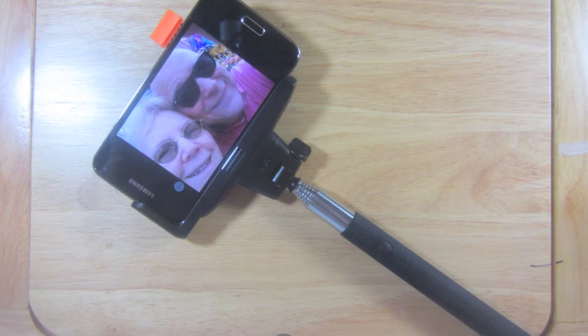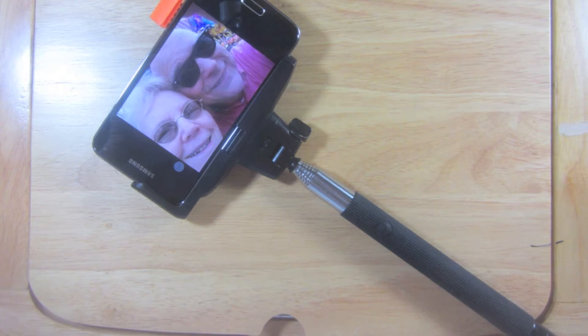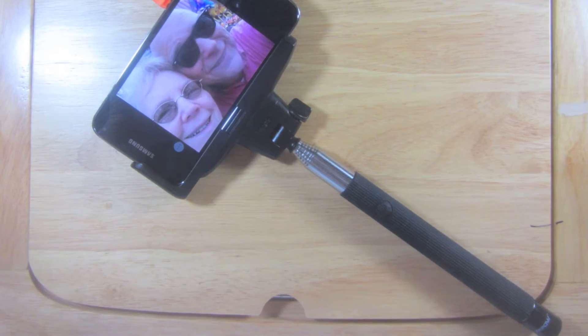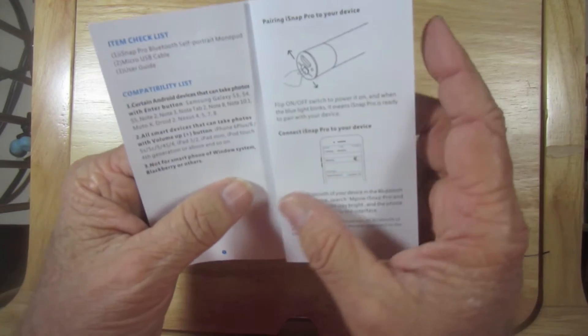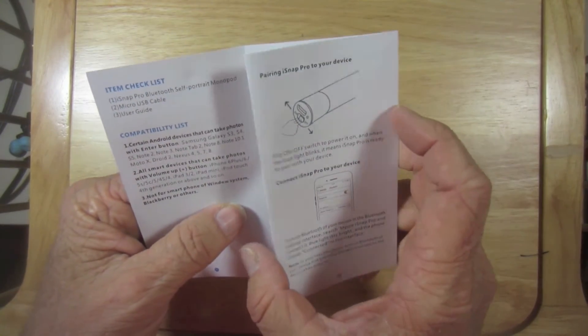This is the iSnap Pro, a Bluetooth Self-Portrait Monopod, a Bluetooth Selfie Stick. The instruction pamphlet is clear and concise with nice diagrams and instructions.